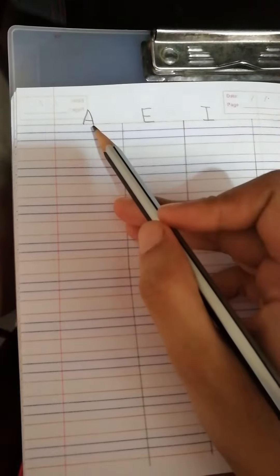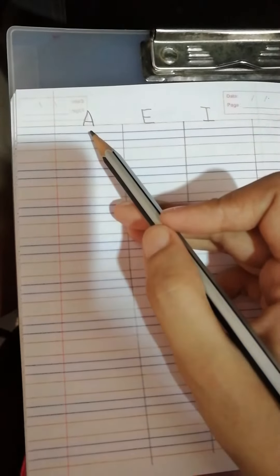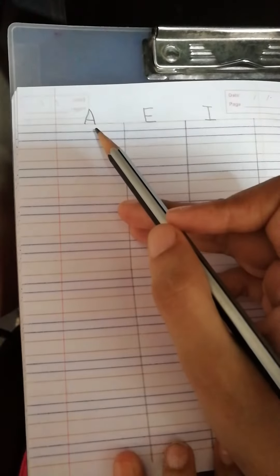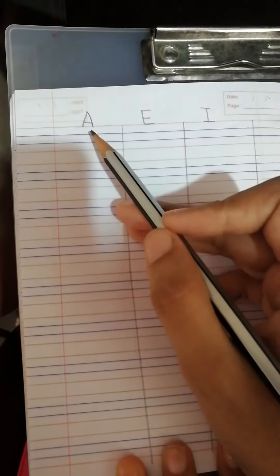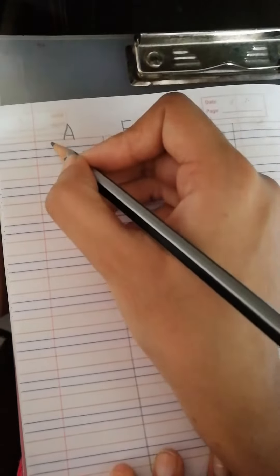So, children, can you tell me which words are formed from the vowel A? Which words have we learnt that has got A sound? Yes. Let us write together.